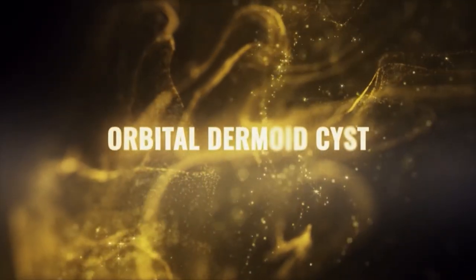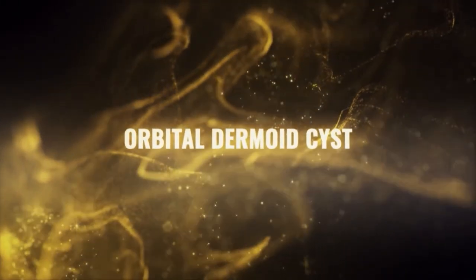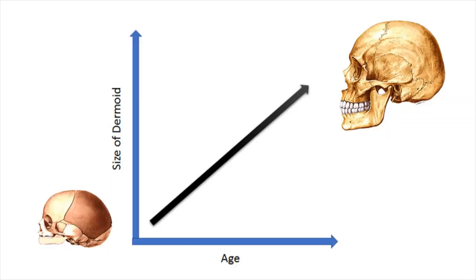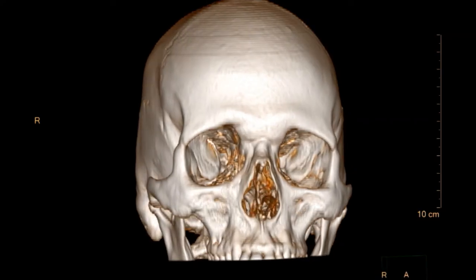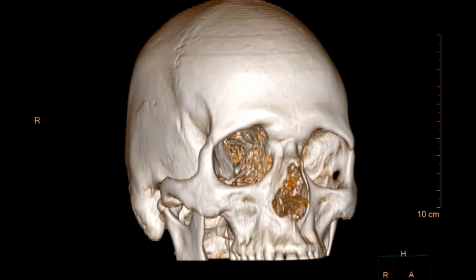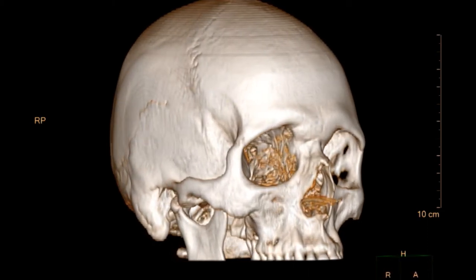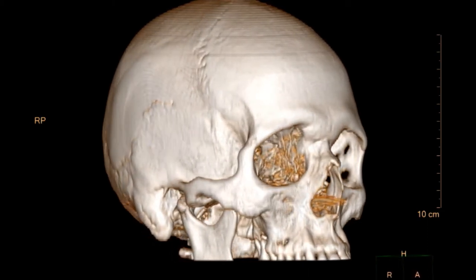Dermoid cyst, a benign developmental choristoma, is the most common orbital tumour of childhood, known to arise from ectodermal sequestration along the lines of embryonic fusion of mesodermal processes. Approximately 80% of dermoid cysts are found in the head and neck region, amounting to 3-9% of all orbital masses.